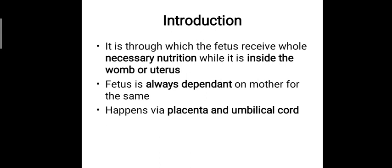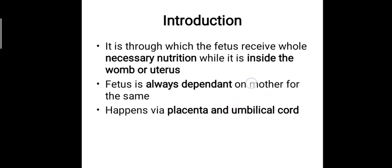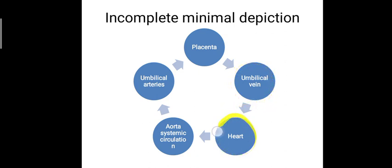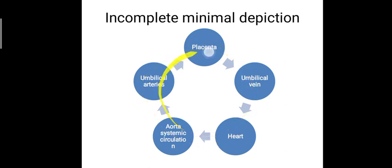This exchange happens through the placenta and the umbilical cord. Here we have a minimal depiction of the fetal circulation. From the placenta, the exchange of materials happens and that oxygenated, nutrient-rich blood is carried through the umbilical vein into the fetal heart. From there it undergoes systemic circulation, and the deoxygenated blood comes back through the umbilical arteries to the placenta. This happens as a cycle.